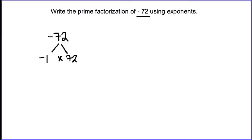Negative one is in fact a prime number, and the reason you know that is it has exactly two factors: one and negative one. Having exactly two factors makes negative one a prime number, so it works for prime factorization. Now we can just deal with the 72.